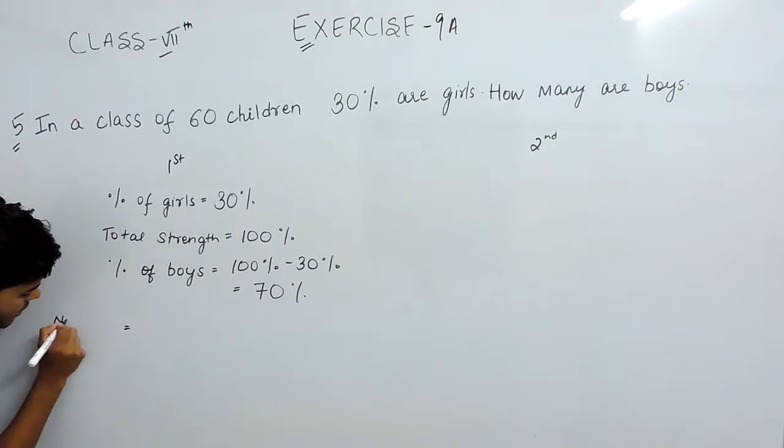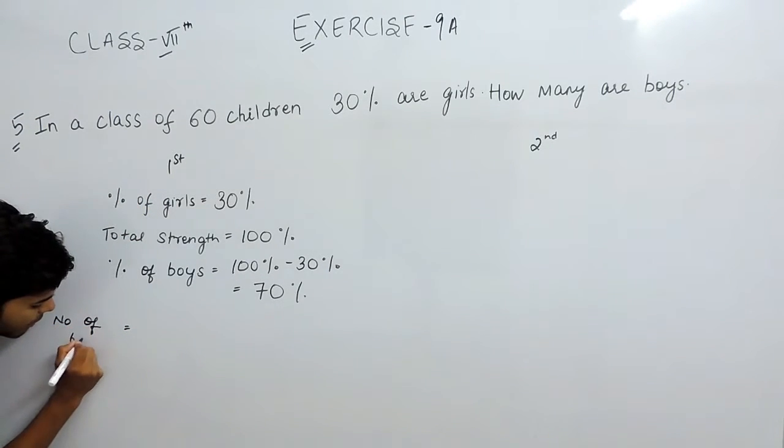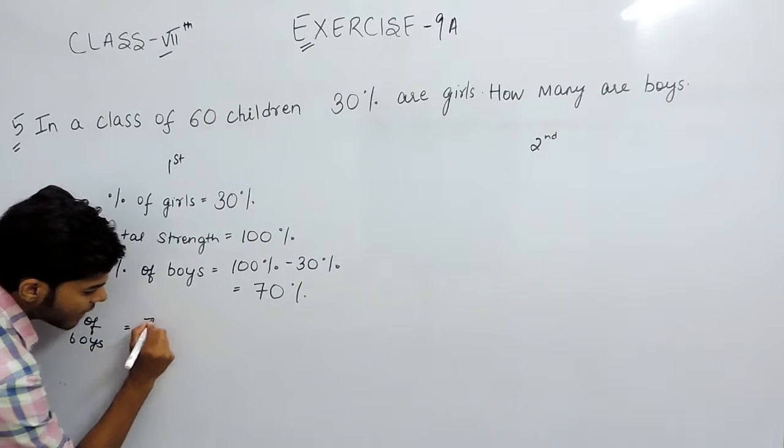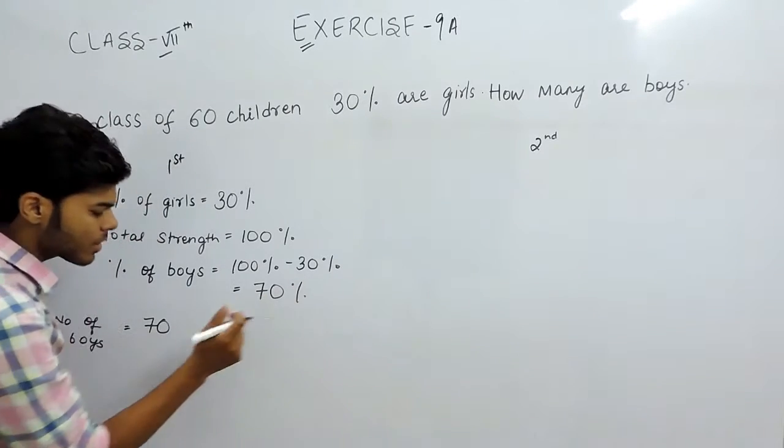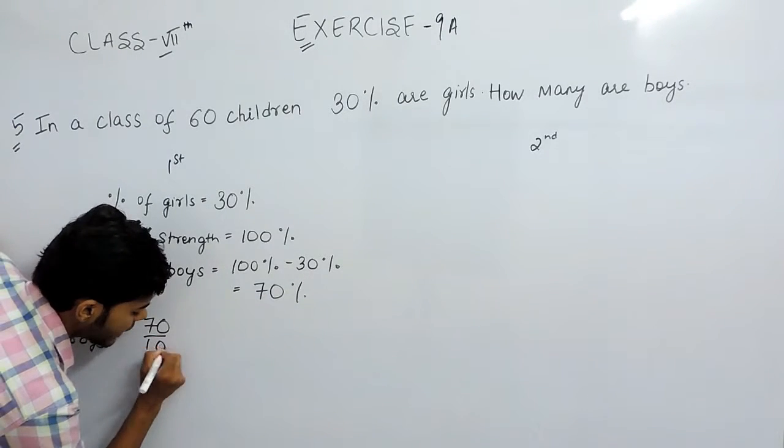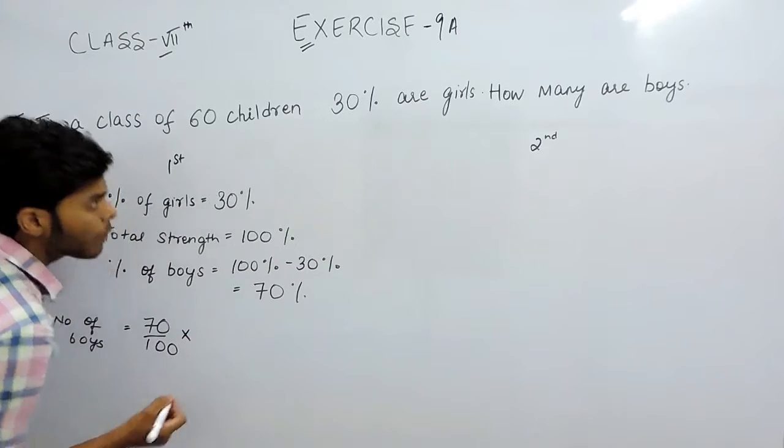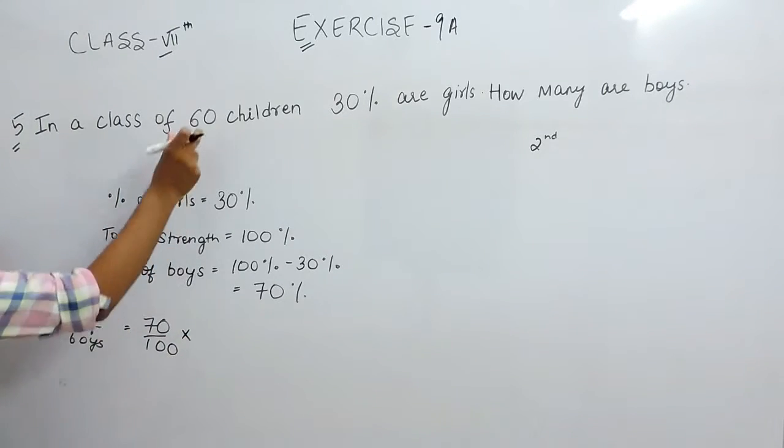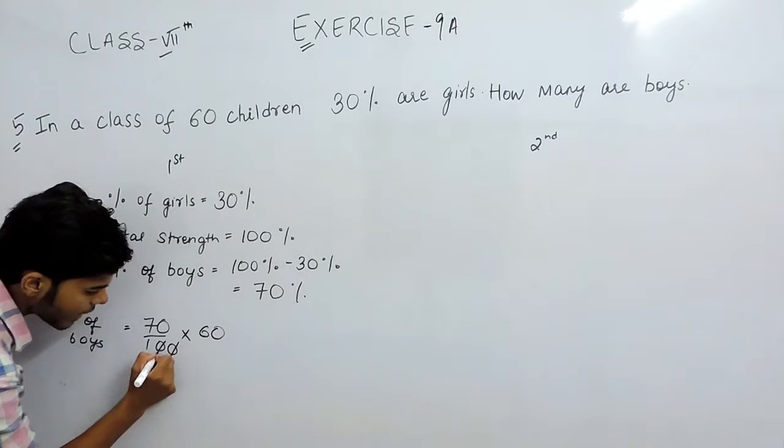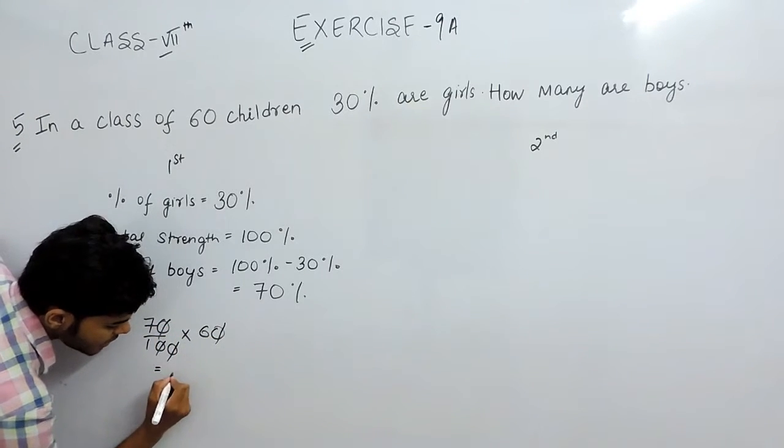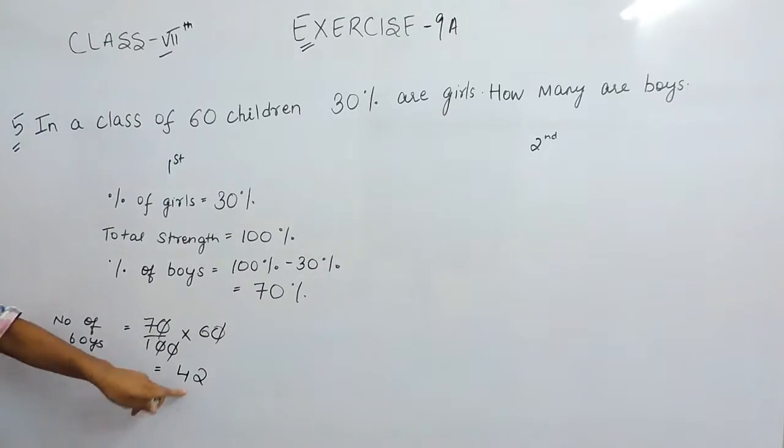The number of boys can be written as 70 upon 100—'upon' means divide because we have removed the percentage sign—so 70 divided by 100, multiplied by the total strength, which is 60. Cancel this out: 7 times 6 is 42. So there are 42 boys.